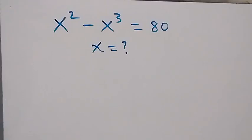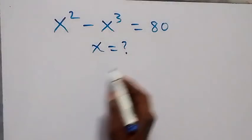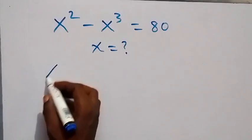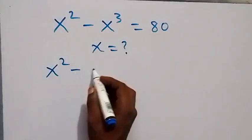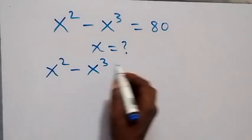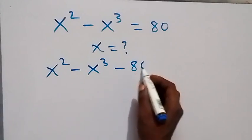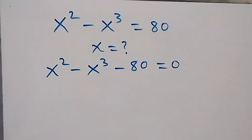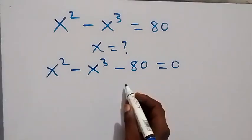Hello, you are welcome. How to solve this nice math problem: we have x squared minus x cubed equals 80. From here we are finding the value of x. Let's take 80 to this side — we have x squared minus x cubed minus 80 equal to 0.